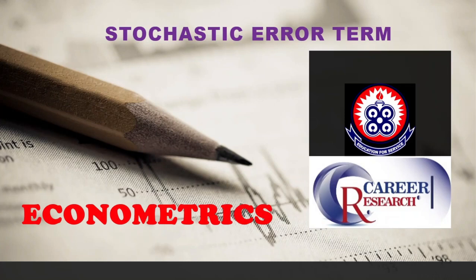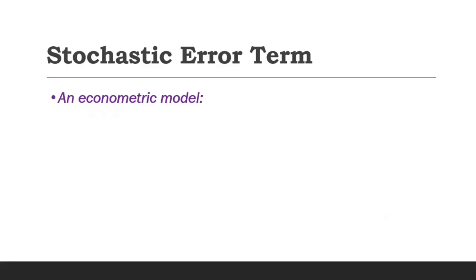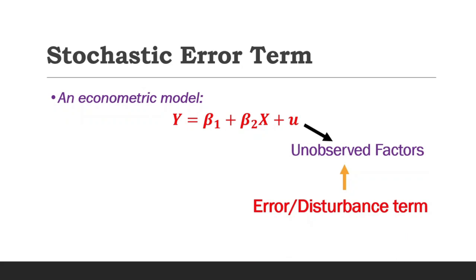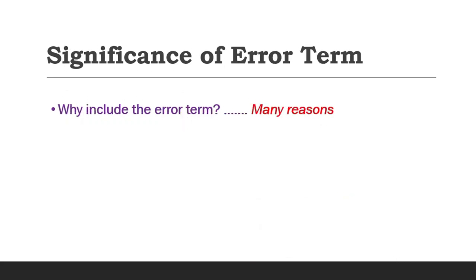Welcome to the video tutorial lessons on Econometrics. In this lesson, we are going to learn about the stochastic error term. In a typical econometric model such as y equals beta1 plus beta2x plus u, the u parameter is known as the unobserved factors, primarily due to the fact that there are other factors that collectively affect y but are omitted from the model. This is also known as the error or disturbance term, and there are many reasons why the error term is included in an econometric model.